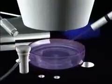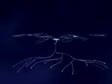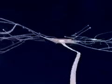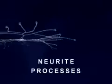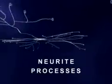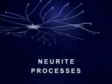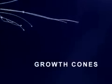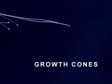To better understand mercury's effect on the brain, let us first illustrate what brain neurons look like and how they grow. In this animation, we see three brain neurons growing in a tissue culture, each with a central cell body and numerous neurite processes. At the end of each neurite is a growth cone where structural proteins are assembled to form the cell membrane.